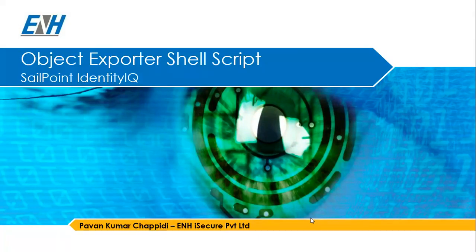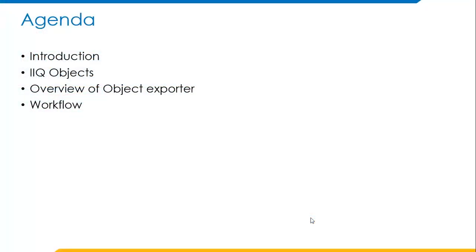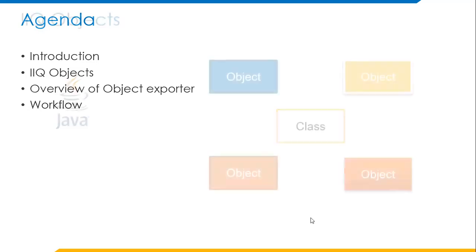Today's agenda covers an introduction, what IIQ objects are, an overview of the object export shell script, and the workflow for the same. This shell script will export objects from one IIQ instance, transfer the exported objects to a second IIQ instance, and then the second instance will import those objects. The main aim of the shell script is to transfer objects from one instance to another.